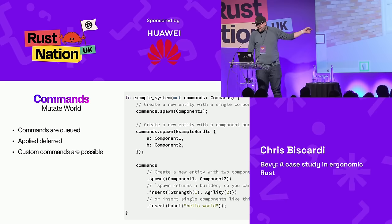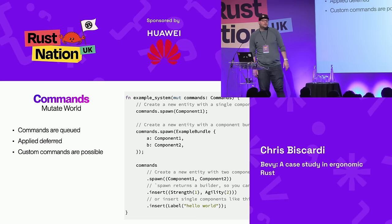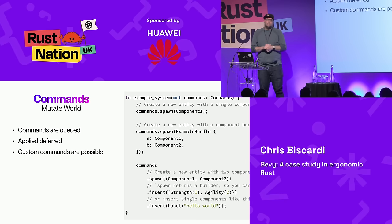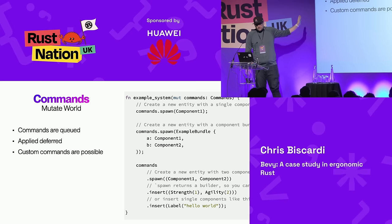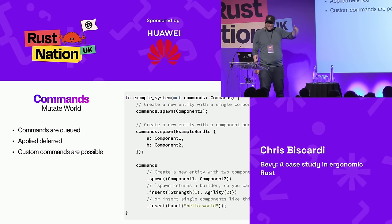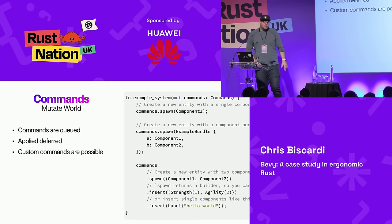Commands are another thing that implements SystemParam — these are world mutations, and one really important thing is that they're deferred; they're not instant. You can't call `commands.spawn` and immediately expect to have the thing — you have to wait for it to be applied later in another system. You can put that apply system anywhere in the system order. Here we're looking at spawn: it spawns an entity and associates a component with it. Bundles are basically collections of components, and you can chain insertions.